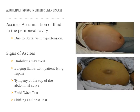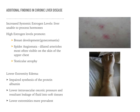Ascites is the accumulation of fluid in the peritoneal cavity. Signs include an inverted umbilicus, bulging flanks, tympani at the top of the abdominal curve, fluid wave, or shifting dullness. Additional findings in chronic liver disease include increased systemic estrogen levels, which can promote gynecomastia in male patients, spider angiomata — dilated arterioles visible in the skin of the upper chest — and testicular atrophy. In the lower extremity, impaired synthesis of protein and albumin leads to lower intravascular oncotic pressure, resulting in fluid leakage into the soft tissues, most prevalent in the lower extremities.